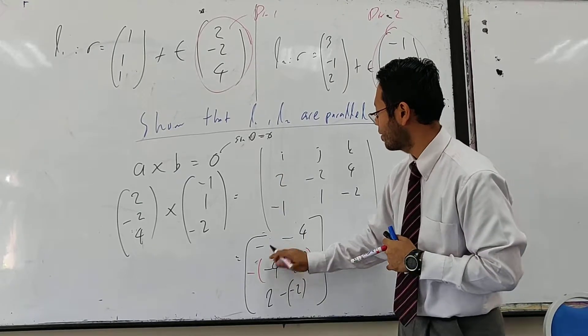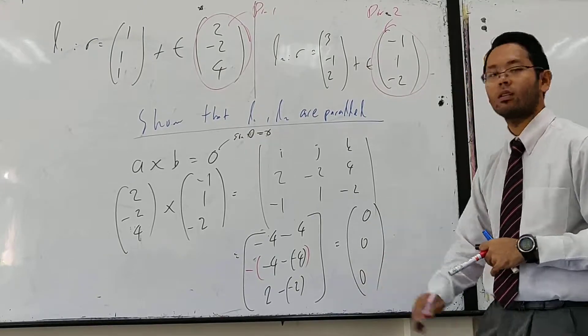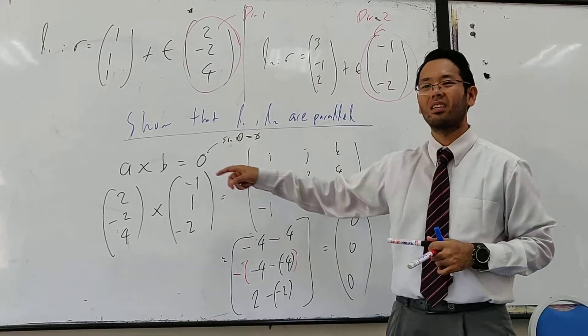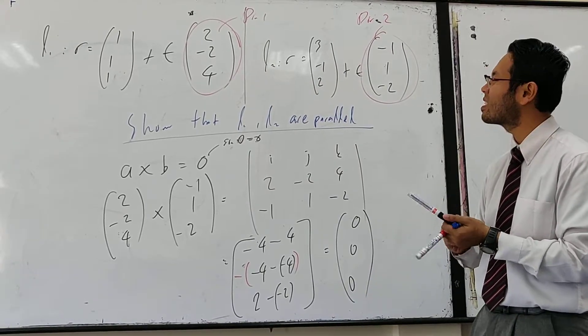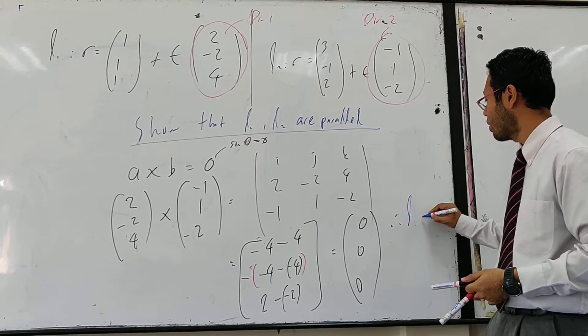Three times four. Zero, zero, zero. What does it mean? It is parallel. As we got zero, so that means they are parallel.